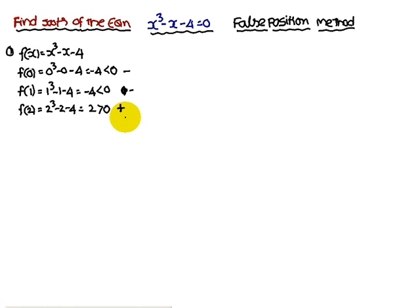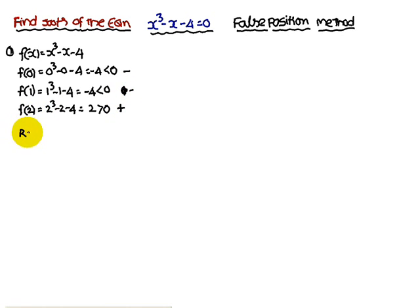As we discussed in the Bisection Method, the root always lies between two consecutive values with opposite signs. One negative followed immediately by one positive means the root lies between 1 and 2.